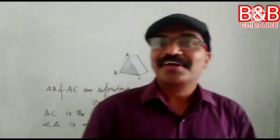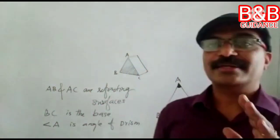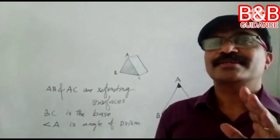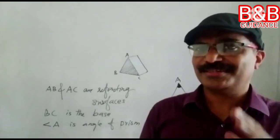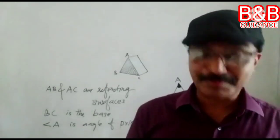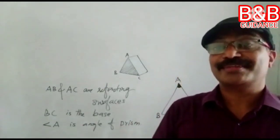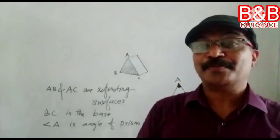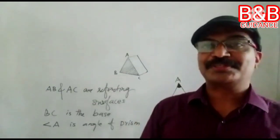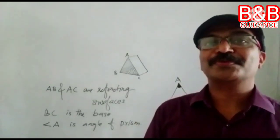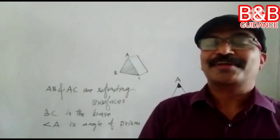BC is the base. This angle — angle A — is called the angle of prism. So angle A is the angle of prism. I discussed this much with classes 10C and 10D in our last class, but I did not take it for classes 10A and 10B, so please read this portion before you come for class tomorrow.